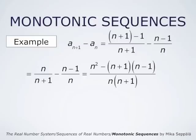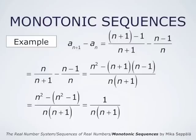Now let us simplify this expression for AN+1 minus AN. We get N/(N+1) minus (N-1)/N. Adding these two fractional expressions, we get (N squared minus N plus N plus 1) divided by N times (N+1). Now the numerator simplifies: (N+1)(N-1) is simply N squared minus 1. Therefore, the numerator is N squared minus (N squared minus 1). But N squared and negative N squared cancel out, and we simply have minus minus 1, that is 1.